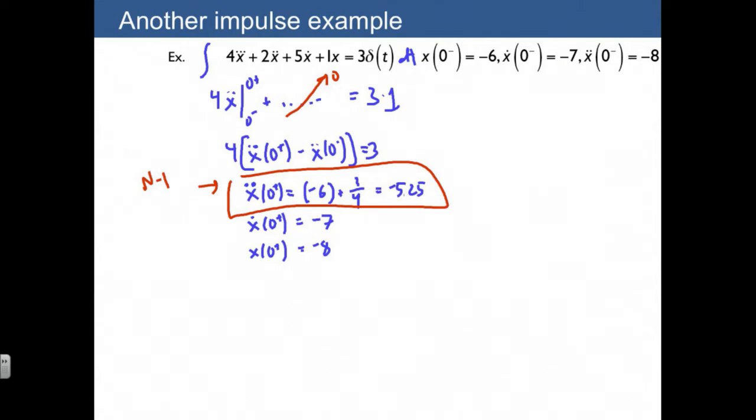I'm not going to go through the free response, but that's what we would use. We would use these initial conditions for the free response, and that would yield the impulse response, using all of these initial conditions.